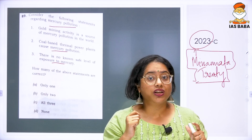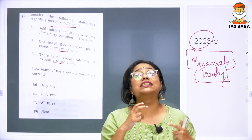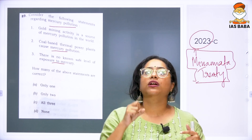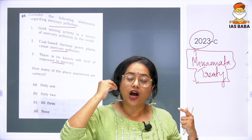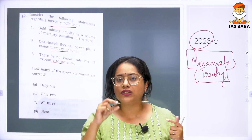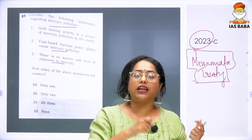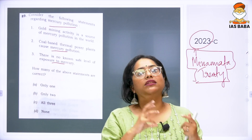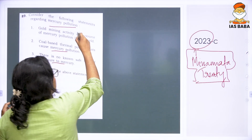An important thing to understand is that mercury is not used as mercury itself in gold mining — mercury is used in the form of a cyanide. Cyanide is a very poisonous, toxic substance. In the case of gold mining, mercury in the form of cyanide is used, and this is why gold mining can cause mercury pollution. That statement is correct.